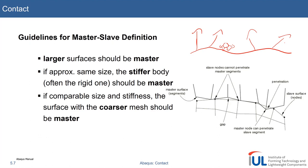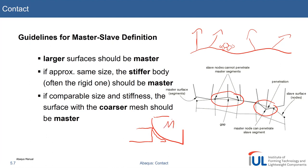Keep in mind that slave nodes are not allowed to penetrate the master surface. For example, if a work piece has to slide along a die, the nodes of the work piece must stay outside the die. You can easily understand why it makes sense to define the die as the master and the deformable work piece as the slave. If a master node slightly penetrates into the deformable work piece, that is not so much of a big deal.